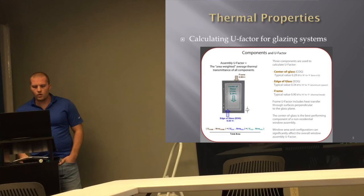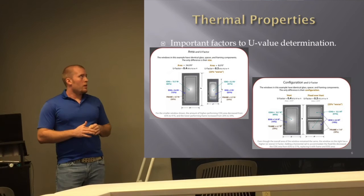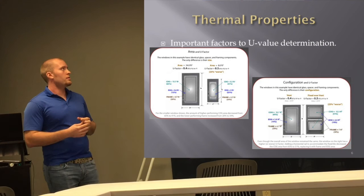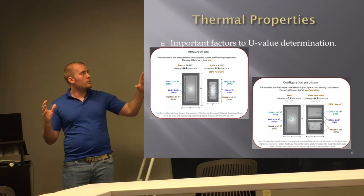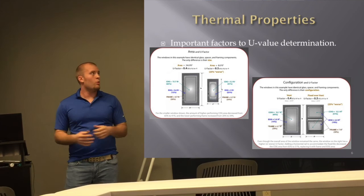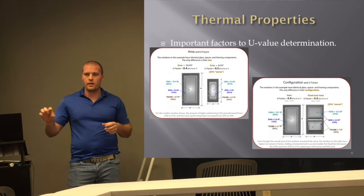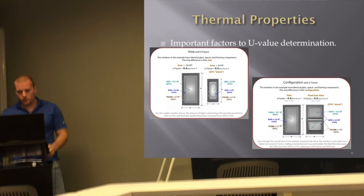For U-value determination, the key theme is more frame equals worse performance. On the left, a large punch window opening has lots of glass; shrinking the glass while keeping the same frame increases U-factor by about 25%. Similarly, adding an intermediate rail to the same size frame — adding more frame to the system — also worsens U-factor by about 25%. These are important factors to keep in mind.